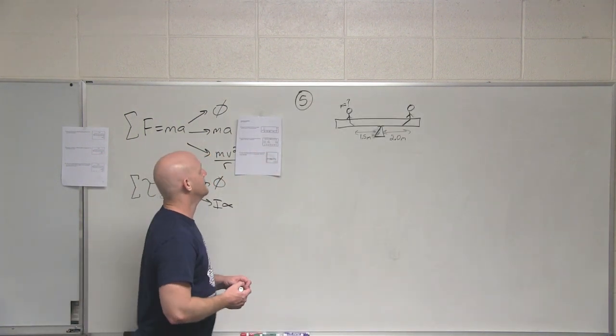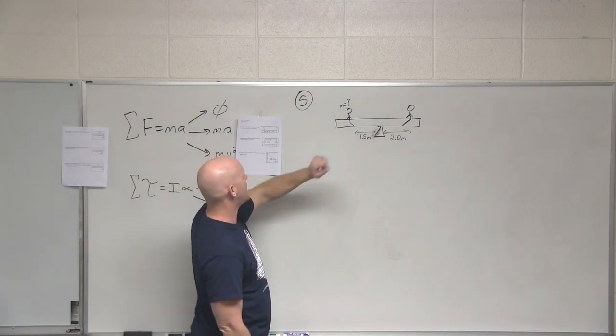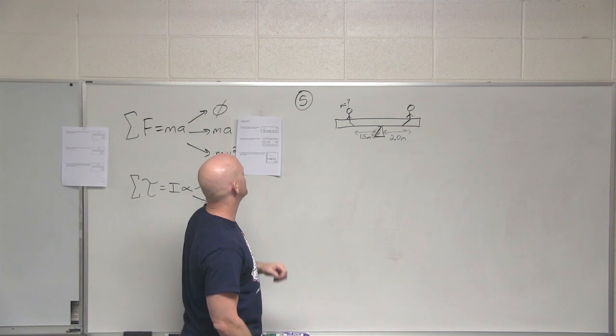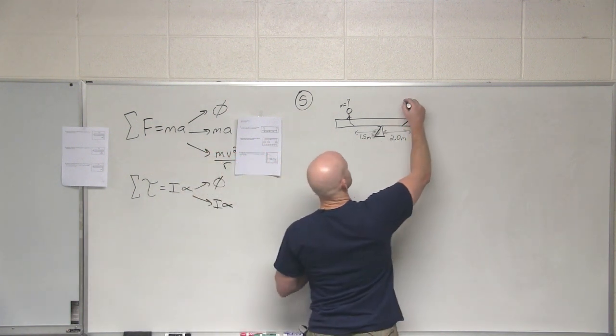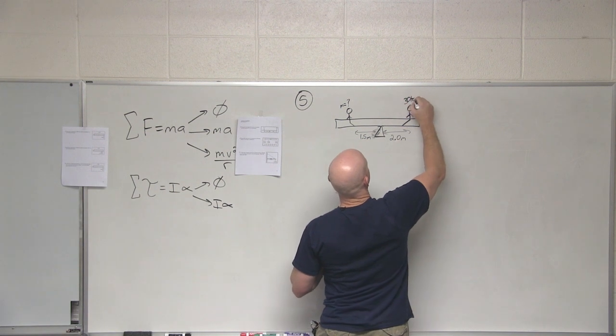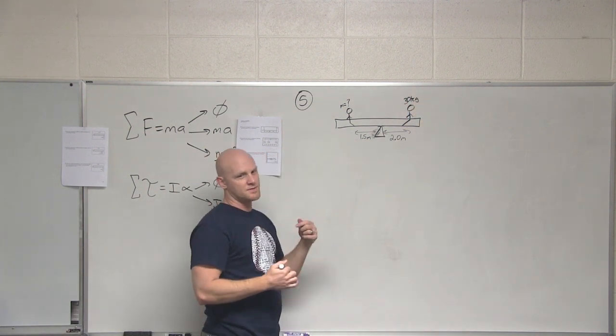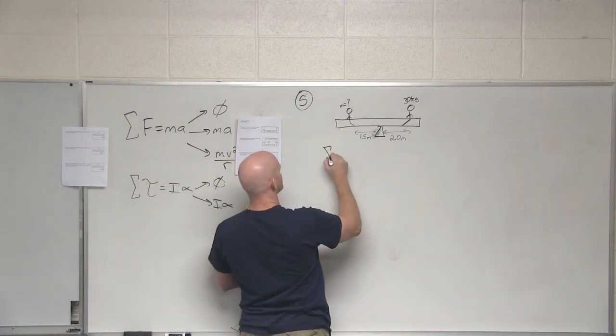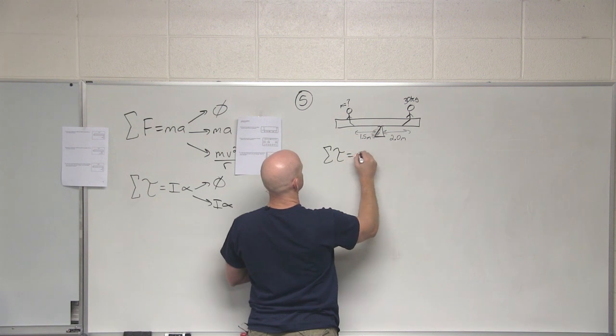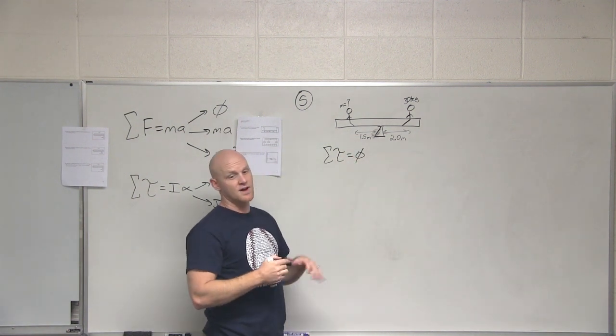All right, number five. Love the diagram there. What must be the weight of the child on the left-hand side of the seesaw for it to be in equilibrium? In this case, the child on the right-hand side is 30 kilograms. To be in equilibrium, we've got two conditions: sum of the forces equals zero, and sum of the torques equals zero. I would recommend you start off with sum of the torques.